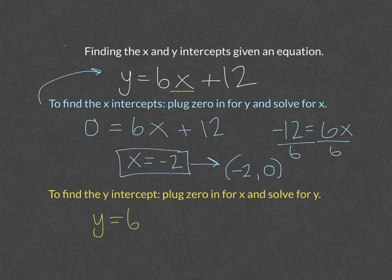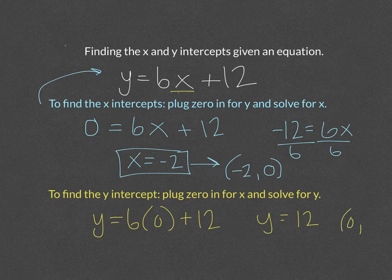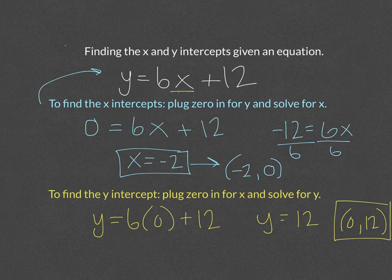So if we go up here, we're going to plug zero in for x plus 12. So our y-intercept is 12. As a point, we plug zero in for x and our y was 12. So this would be the actual y-intercept there.